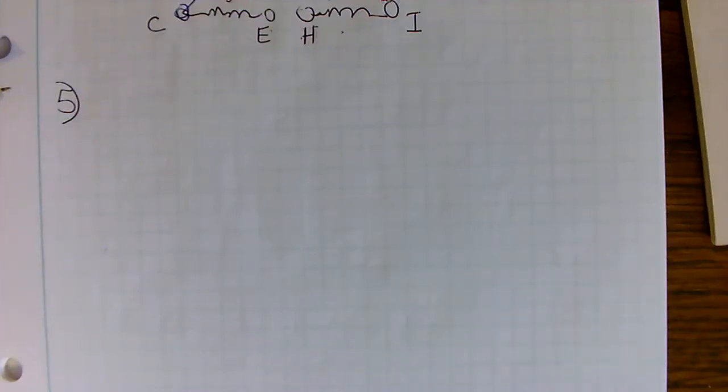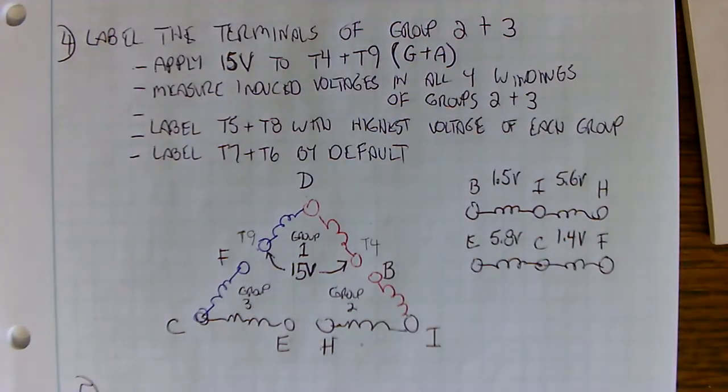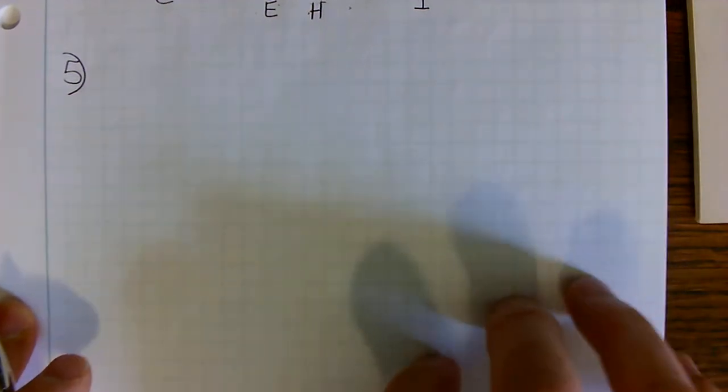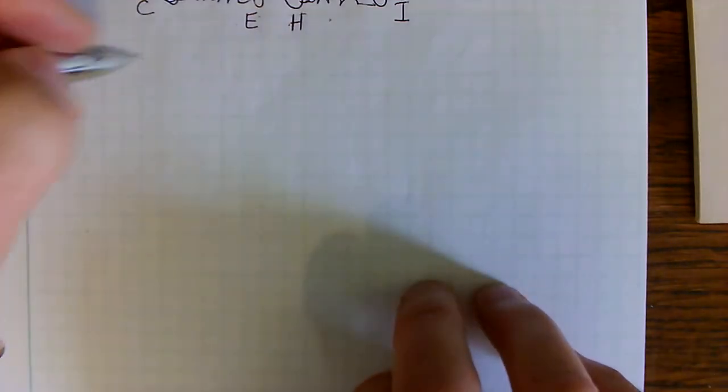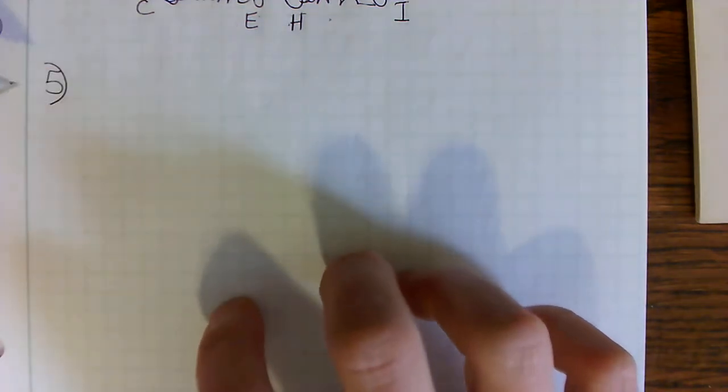Alright, we're on video number three for this lead ID Delta process. Just make sure you watched the previous video. You should have this written down, and we're on step five now. If this doesn't make sense to you, then I wouldn't bother watching this because this is a video in a series with two other previous videos.